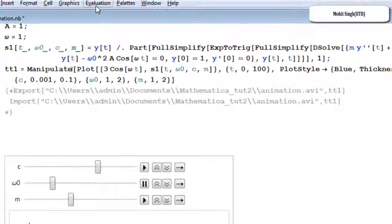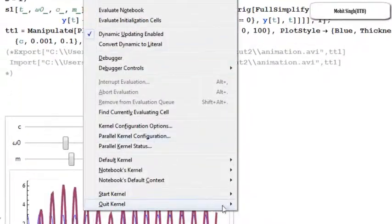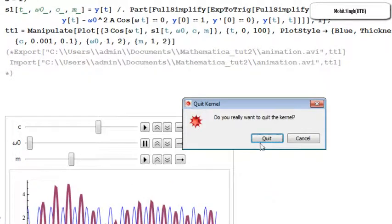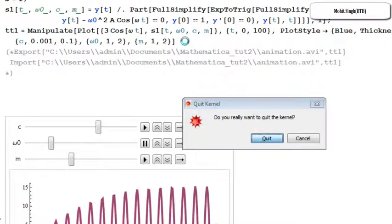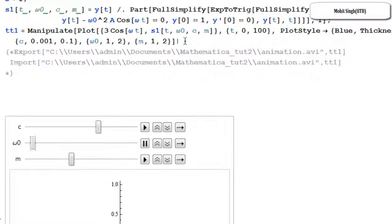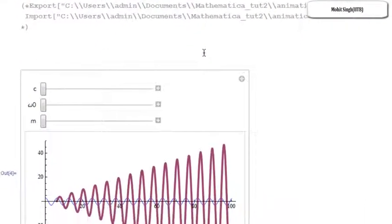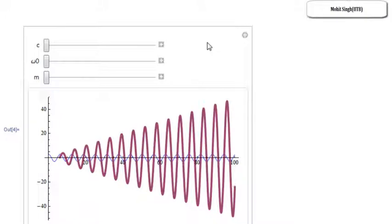Now I will again quit the kernel to show the difference between animate and manipulate command. Let me quickly run this code. Here is the output.